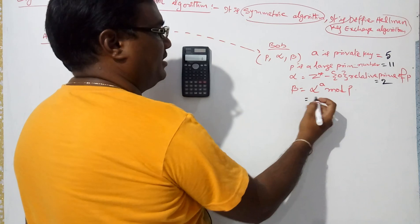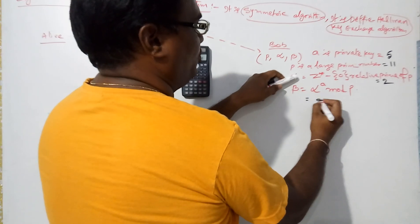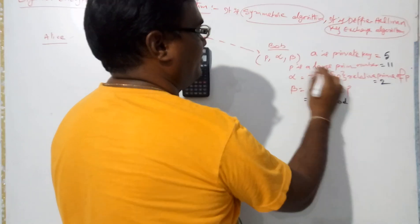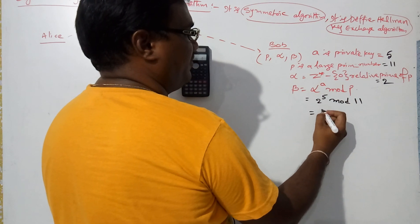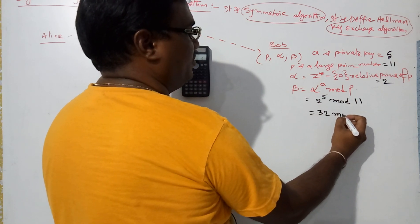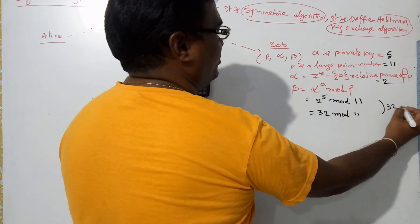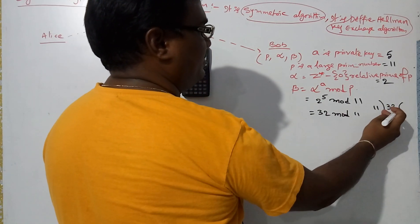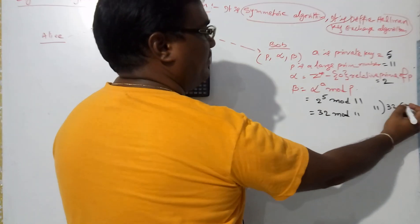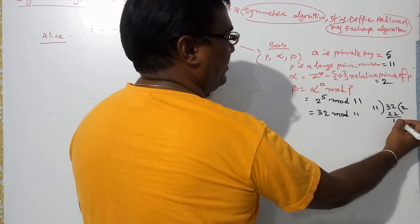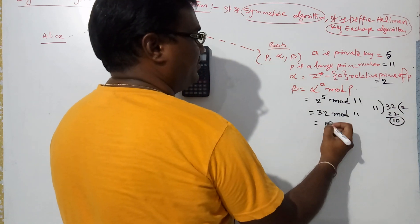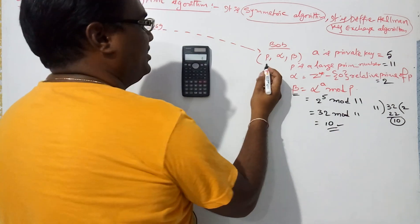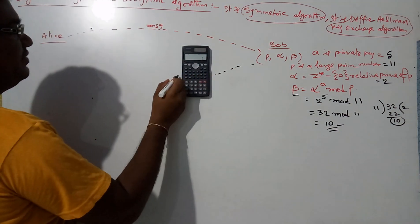Now beta: alpha means 2 power a means 5 mod p means 11. 2 to the power 5 equals 32 mod 11. 32 divided by 11 gives remainder 10. Therefore beta is equal to 10.